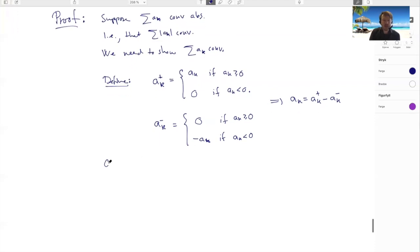The point is the following. Observe that my a_k^+, who is either zero or a_k if a_k is positive, is smaller than the absolute value of a_k. So this is always positive. If my a_k is negative, this is something positive, but this is zero. If my a_k is positive, then this is equal to a_k and this is equal to a_k. So in fact, either left-hand side is equal to the right-hand side or left-hand side is equal to zero.